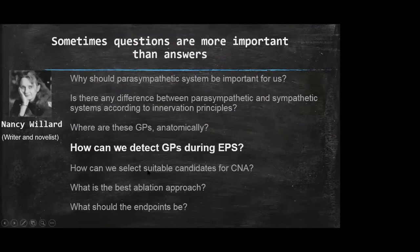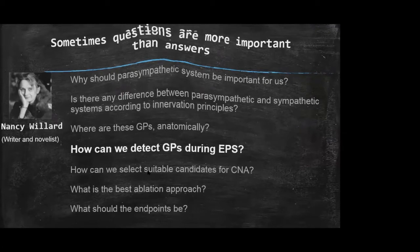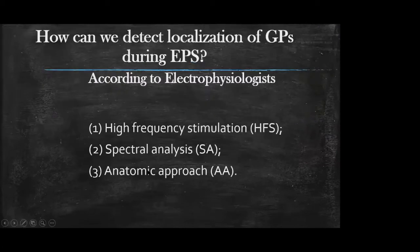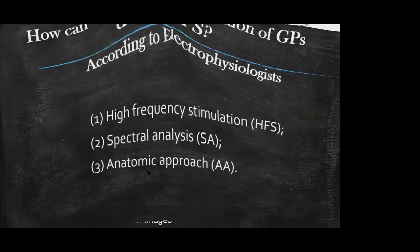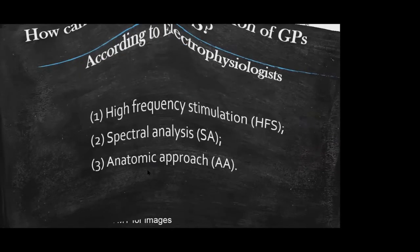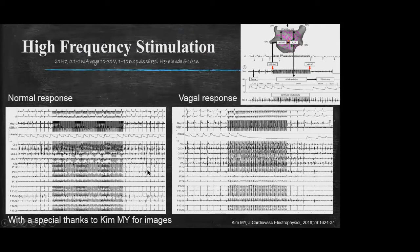Despite our anatomical knowledge, GP localization demonstrates significant variability from patient to patient, so we need a method to detect localization during electrophysiological study. Different groups use different techniques, including high-frequency stimulation, spectral analysis, and empirical anatomic ablation. High-frequency stimulation applied in normal atrial myocardium will not cause any significant effect on PP or PR interval, but if applied in a ganglionated plexus site, it causes a vagabond discharge effect, resulting in PP or PR prolongation.